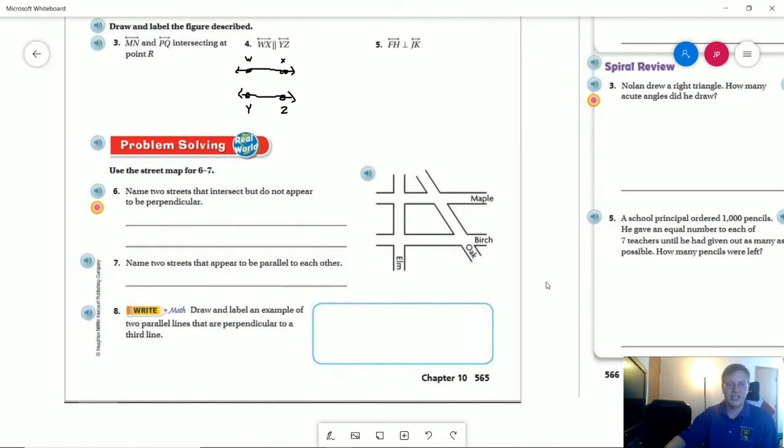Number eight, draw and label an example of two parallel lines that are perpendicular to a third line. I am not going to label it, but I will draw you an example of what this could look like. And if you have done number one on the back, this should look very similar to, very familiar to you as one of your possible answers.